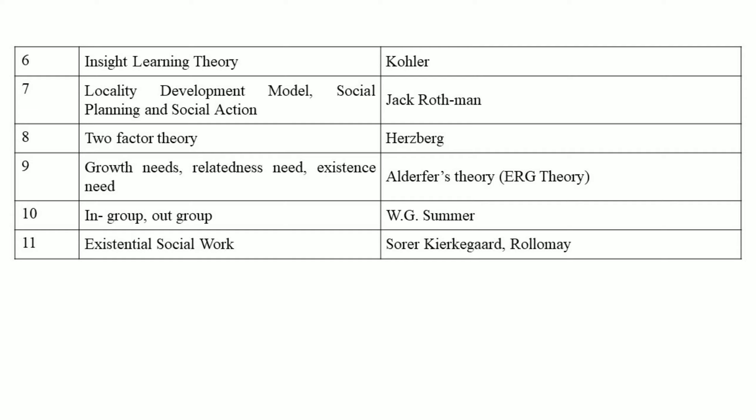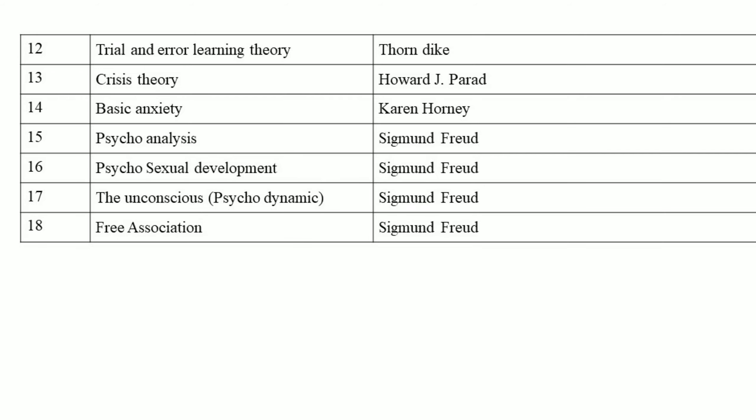Last one: existential social work, which was given by Søren Kierkegaard and Rollo May. Twelfth concept: trial and error learning theory, which was propounded by Thorndike. Crisis theory by Howard and basic anxiety by Karen Horney.